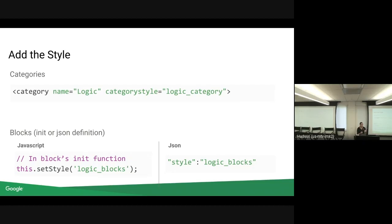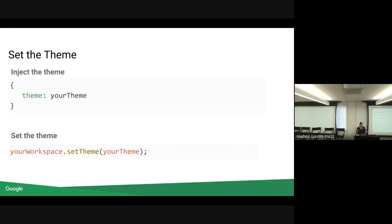Then, for blocks in the blocks init function, we set the style for that we created. And then, if it's JSON, we just have the style attribute and the name of the style. Now, our blocks know what style they are. Categories know what style they are. And we can move on to setting the theme.